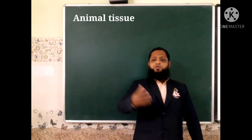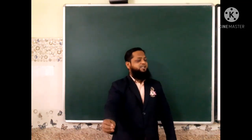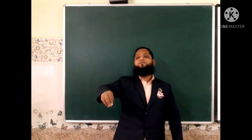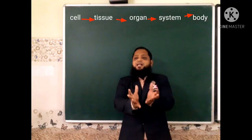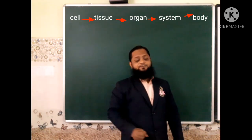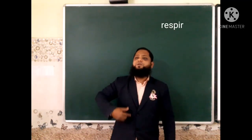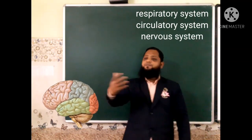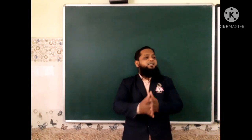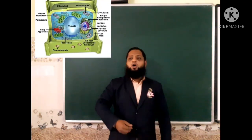Let's begin. We know that tissue is a group of cells, and the cell is the structural and functional unit of life. Life begins from the cell. A group of cells is said to be tissue, a group of tissues is said to be an organ, and a group of organs is said to be a system — just like the respiratory system, digestive system, nervous system, circulatory system, and muscular system.